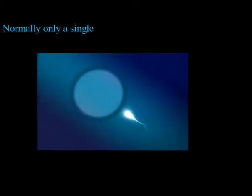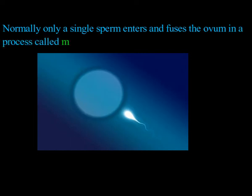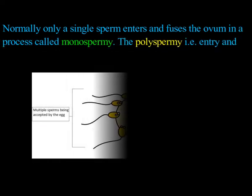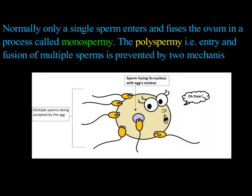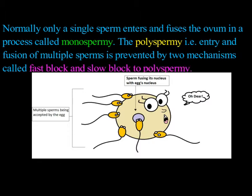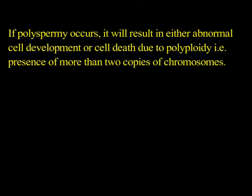Normally only a single sperm enters and fuses with the ovum in a process called monospermia. Polyspermia, that is the entry and fusion of multiple sperms into the ovum, is prevented by two mechanisms called fast block and slow block to polyspermia. If polyspermia occurs, it will result in either abnormal cell development or cell death due to polyploidy, that is the presence of more than two copies of chromosomes.